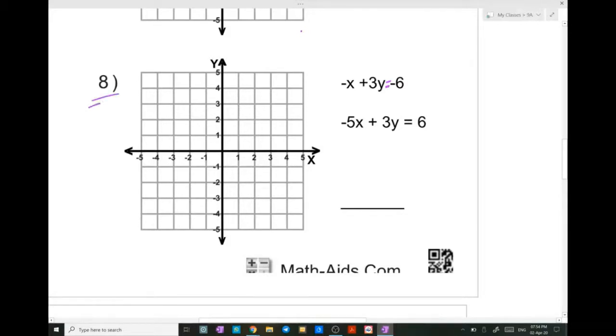Now, the same number, but instead of minus x plus 3y equals 6, we are going to solve minus x plus 3y equals minus 6.